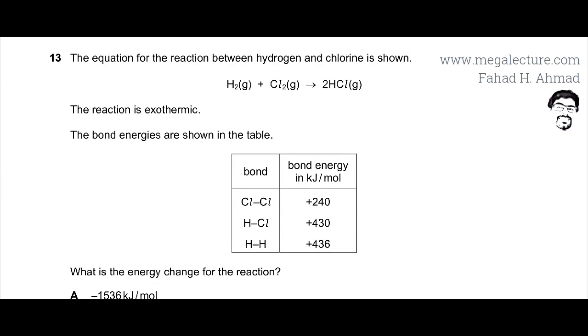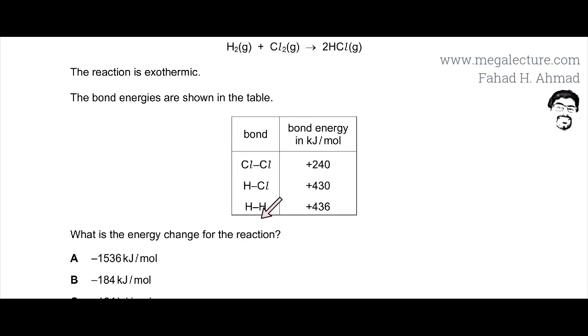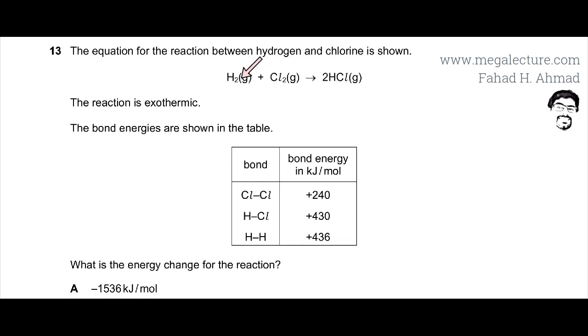You're given bond values: Cl-Cl is 240, H-Cl is 430, and H-H is 436. The question asks what is the energy change for this reaction, so you need to find the net energy change.